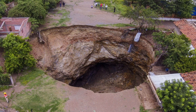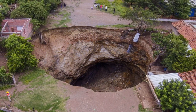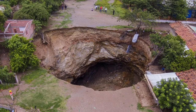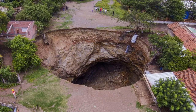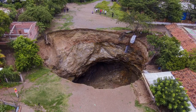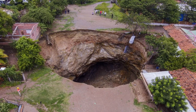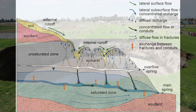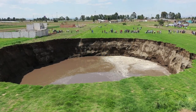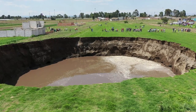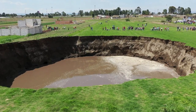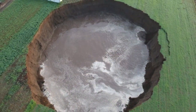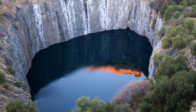A sinkhole, also known as a cenote, sink, swallet, swallow hole, or doline, is a depression or hole in the ground caused by some form of collapse by the surface layer. Most are caused by karst processes, the chemical dissolution of carbonate rocks, or suffosion processes. Sinkholes vary in size from 1 to 600 meters both in diameter and depth, and vary in form from soil-lined bowls to bedrock-edged chasms.